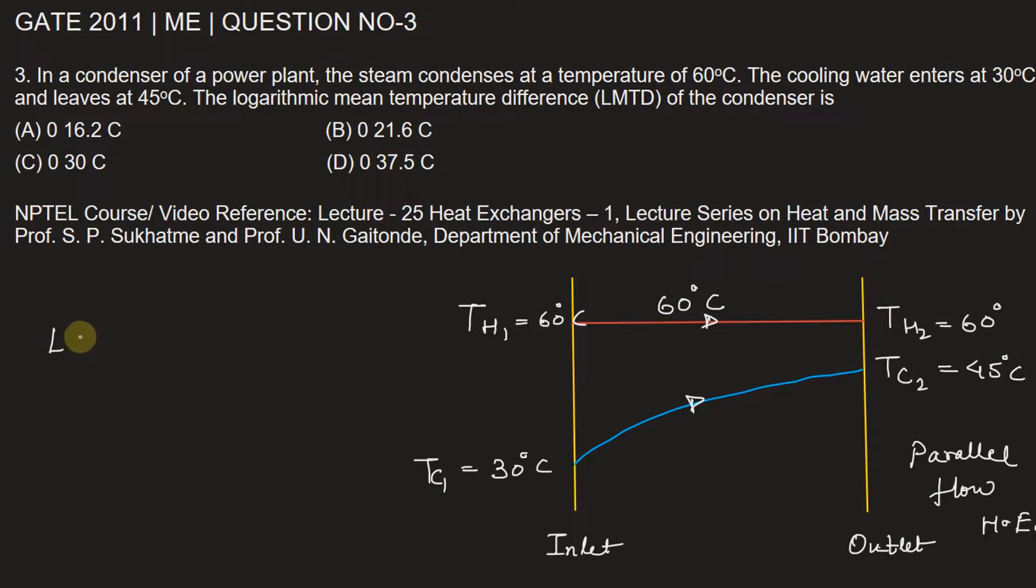LMTD that we need to find in this problem - that is the logarithmic mean temperature difference - which is given by delta theta one minus delta theta two...